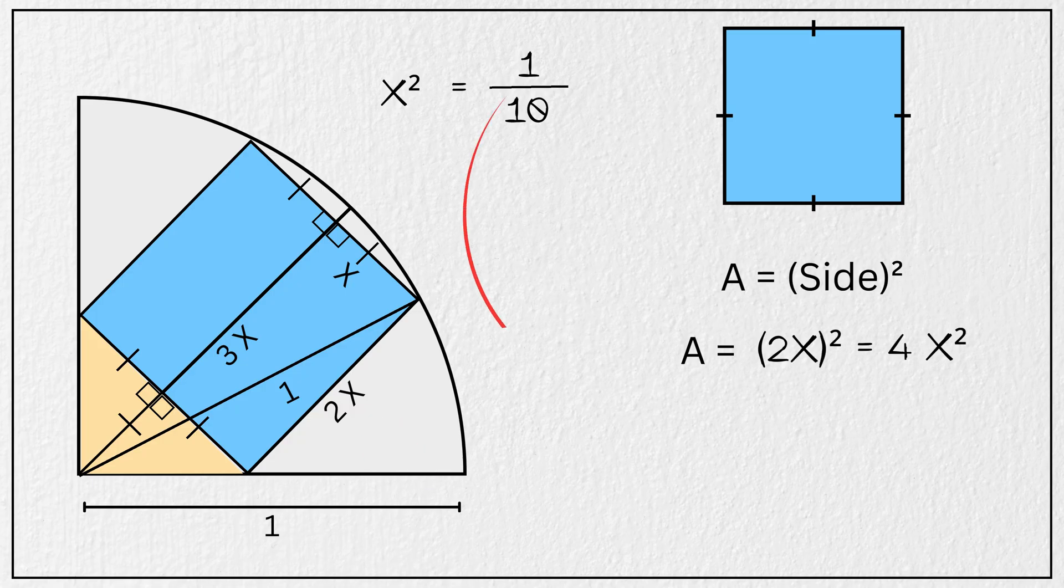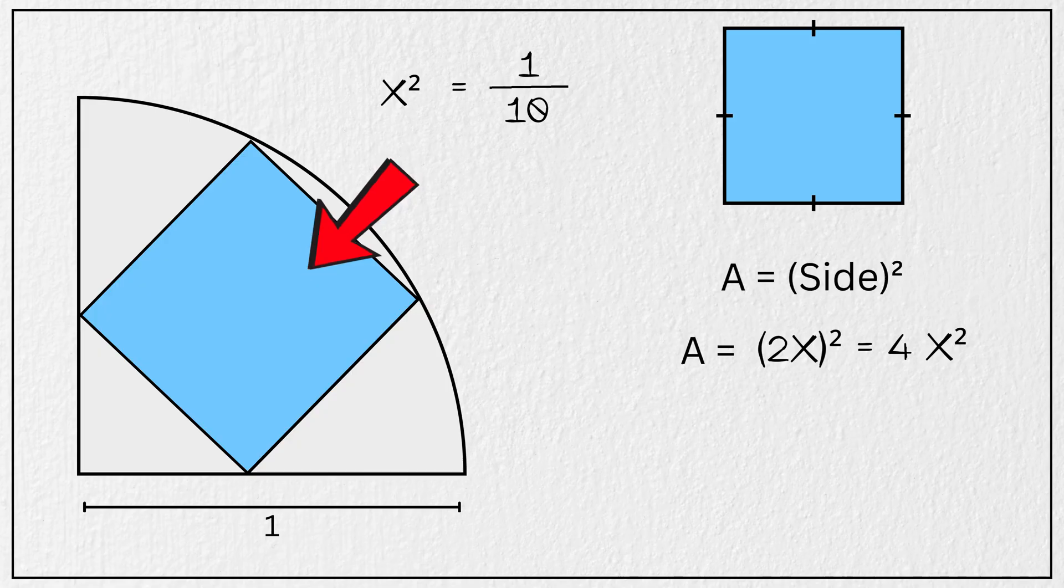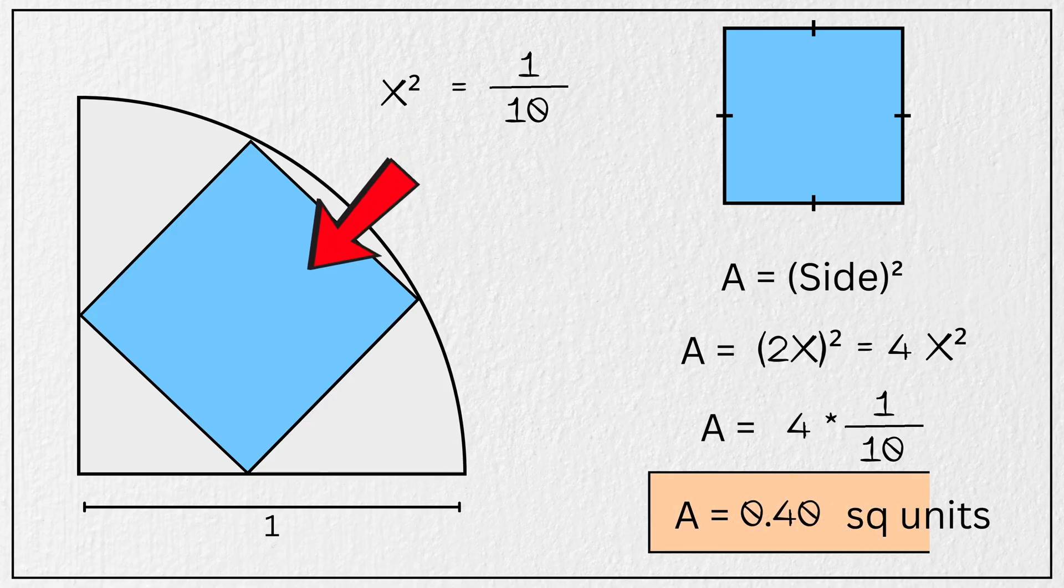So substituting this x squared equal to 1 over 10 into the formula, we get area of this blue shaded square is equal to 4 times 1 over 10, which is 0.4 square units. And that's our final answer.